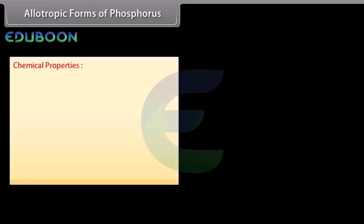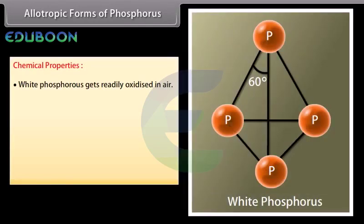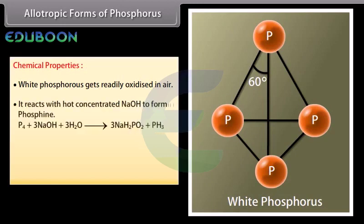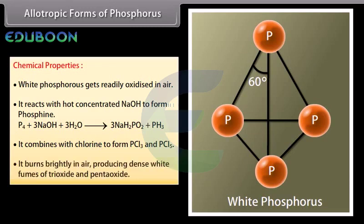Chemical properties of white phosphorus: It gets readily oxidized in air. It reacts with hot concentrated NaOH to form phosphine. It combines with chlorine to form PCl3 and PCl5. It burns brightly in air, producing dense white fumes of trioxide and pentoxide.